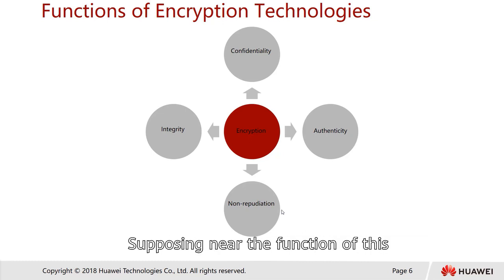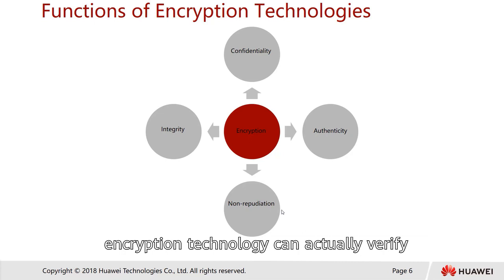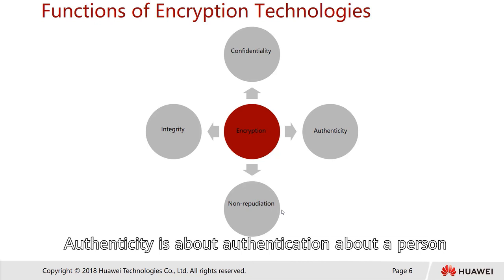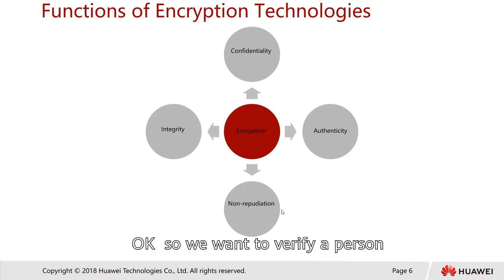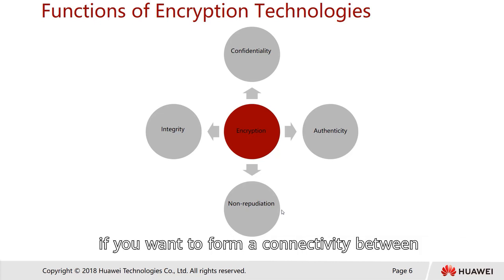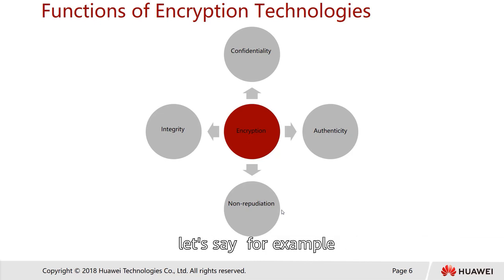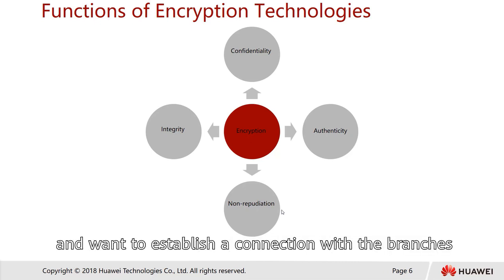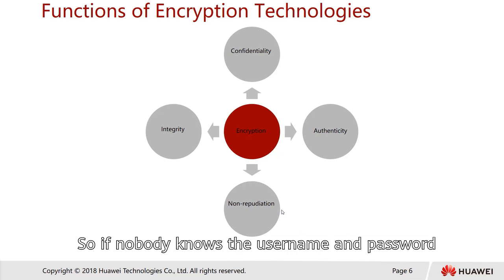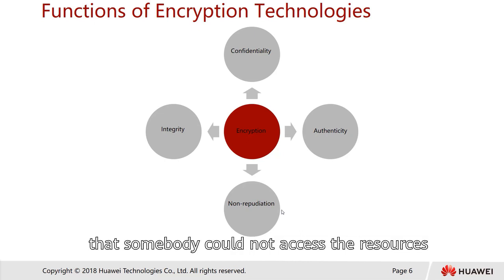The function of encryption technology can actually verify the sender's identity. Finally, authenticity is about authentication of a person — you want to verify the sender or the receiver. For example, if you want to establish connectivity between a company's headquarters and its branches, authentication is what asks for a username and password. If nobody knows the username and password, nobody can access the resources.